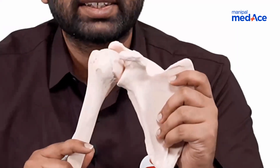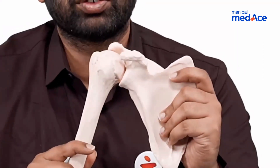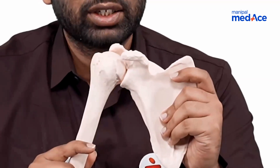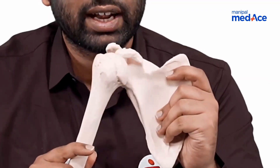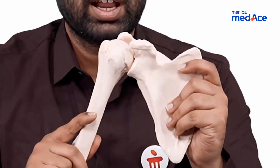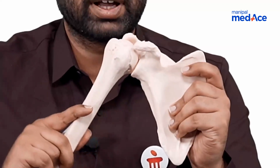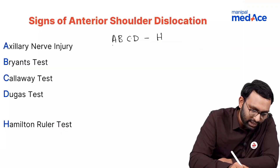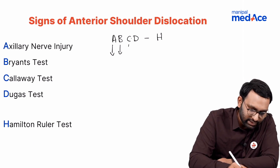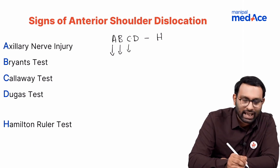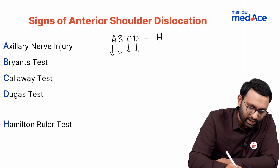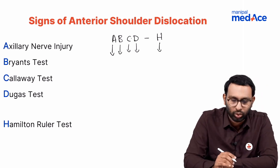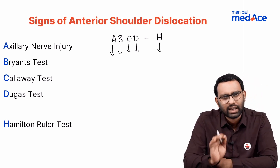Now let's understand the types of anterior shoulder dislocation. As the humeral head dislocates anteriorly, remember this mnemonic: A stands for axillary nerve injury, B stands for Bryant's test, C stands for Callaway's test, D stands for Dugas test, and H stands for Hamilton ruler test.